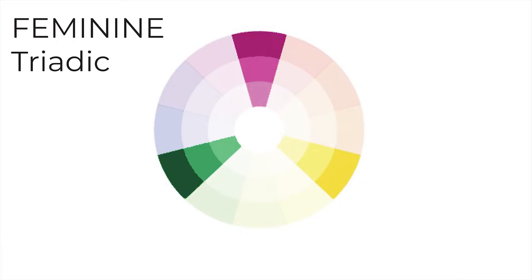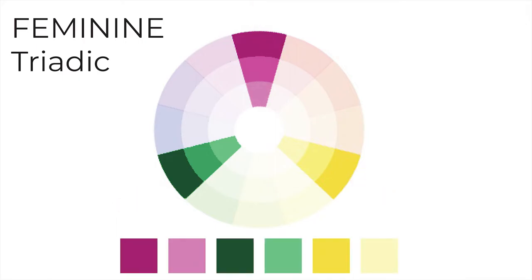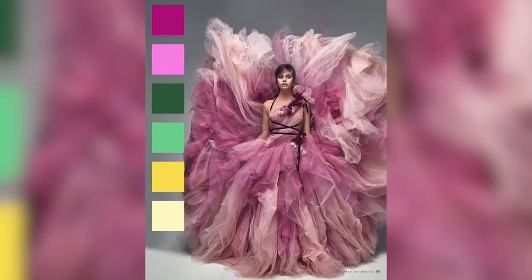Using the triadic color scheme to choose your six colors based on the feminine style aesthetic. The pink, yellow, and green colors make up a triadic color scheme on the color wheel, which is why this color scheme works very well with the feminine style aesthetic. By selecting these three colors and then going monochromatic in the tones — either shading or tinting the three colors — you can get your six colors. Here is what it looks like.